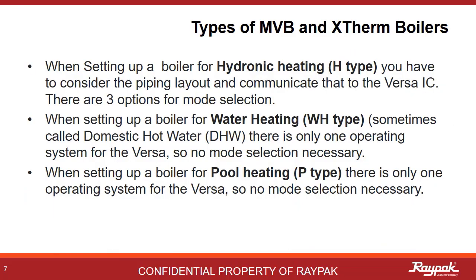When ordering a hydronic heater, there are three possible ways to set it up. These are called modes and effectively are operating programs for the boiler. If the appliance has a water heater ID card, then it is a water heater and there is only one mode of operation. Same if the appliance was purchased as a pool heater — there is only one mode of operation there as well.